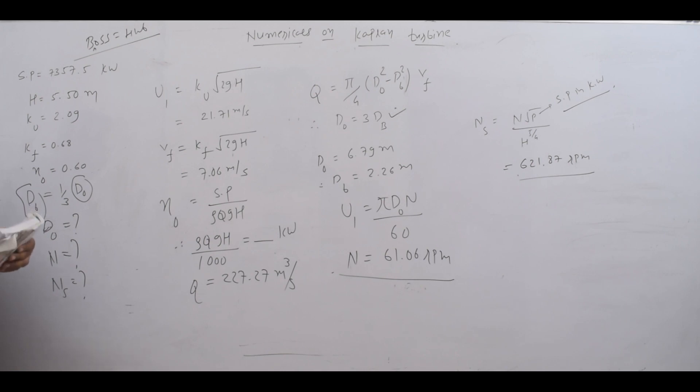We need to find the diameter of runner do, the speed N, and the specific speed. We have not studied specific speed yet, but we will take it in this example, then study it as a different topic later.